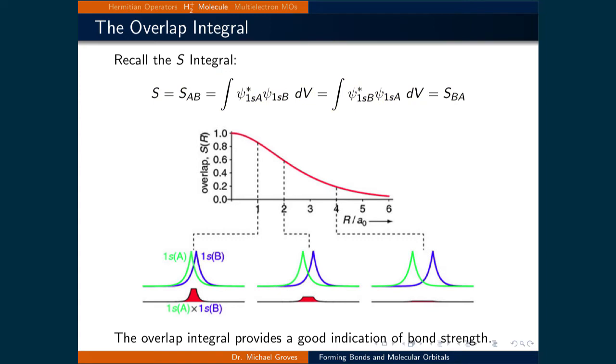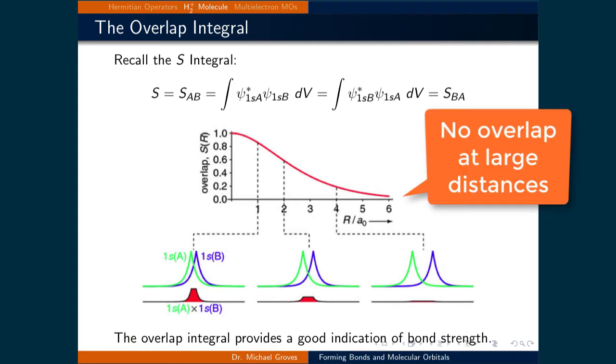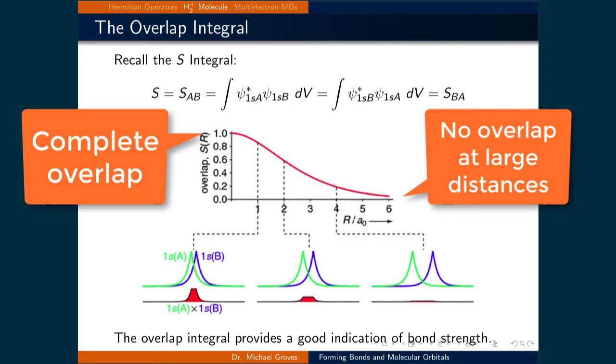This is called the overlap integral. It quantifies how much each of the two nuclei centered 1s orbitals overlap. Its value is dependent upon the internuclear separation and increases as the nuclei move closer together. It ranges between 0, meaning no overlap, and 1, meaning perfect overlap.